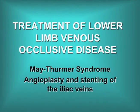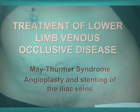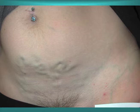Treatment of lower limb occlusive disease such as May-Thurner syndrome is undertaken using angioplasty and invariably stenting of the iliac veins. The most common clinical finding in May-Thurner syndrome — which is occlusion of the left common iliac vein due to compression of the left internal iliac vein between the external iliac artery and the spine — demonstrated here is cross-pelvic venous collaterals in the abdominal wall, which is a clinical sign of venous occlusive disease in the iliac system.